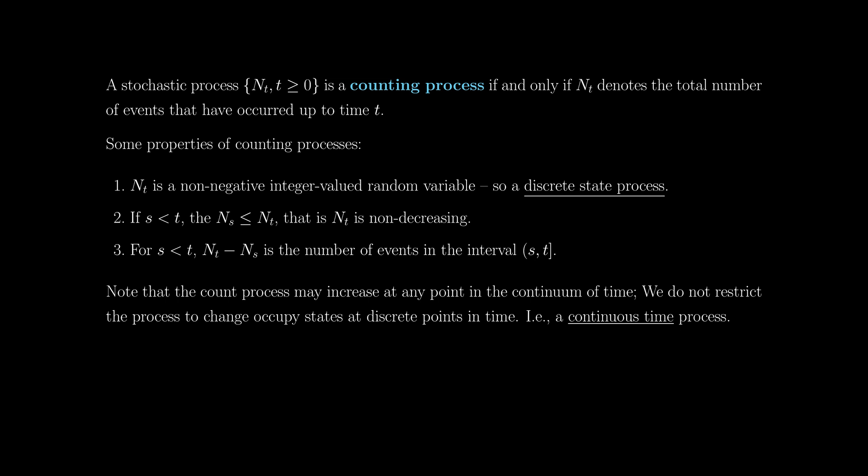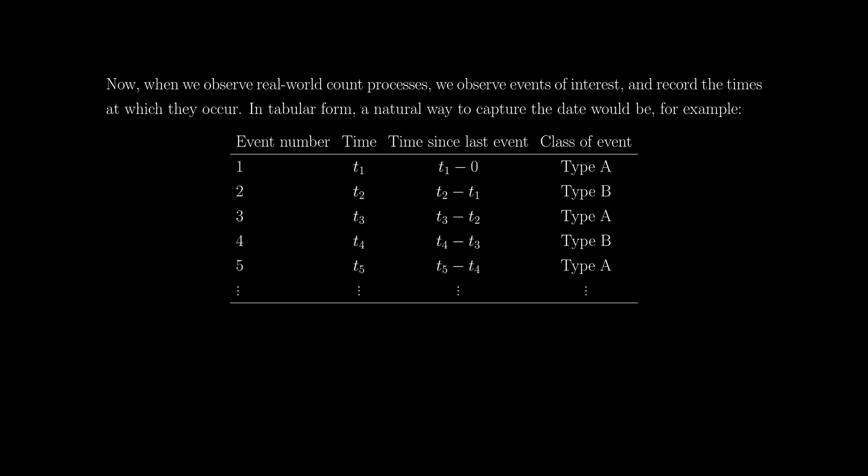Before we jump into the probability models for counting processes, it's worth having a look at how one captures data for such processes, so you have a clear idea of what the nomenclature we'll be using actually refers to. When we observe real-world processes, we observe events of interest and record the times at which they occur — we're counting things, we observe them, and we write down the time.